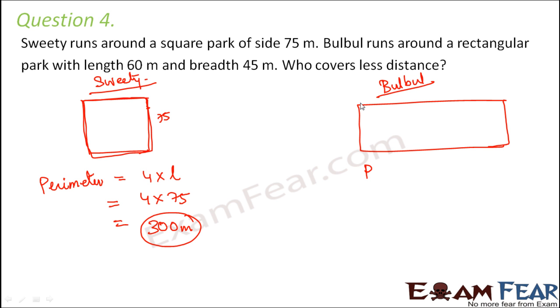What about Bulbul? So Bulbul is also running around the boundary of this rectangular park. So the perimeter of this rectangular park would be 2 into length plus breadth. So in the problem it is given the length is 60 and breadth is 45. So 2 into 60 plus 45. So this is equal to 2 into 105 that is equal to 210 meters.